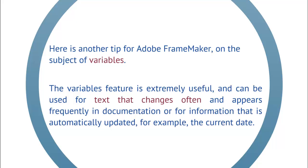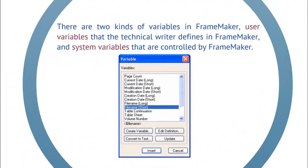In addition, variables are good for using with information that is automatically updated. There are two kinds of variables in FrameMaker: user variables that the technical writer defines in FrameMaker, such as product and company names, and system variables that are controlled by FrameMaker, such as file name.